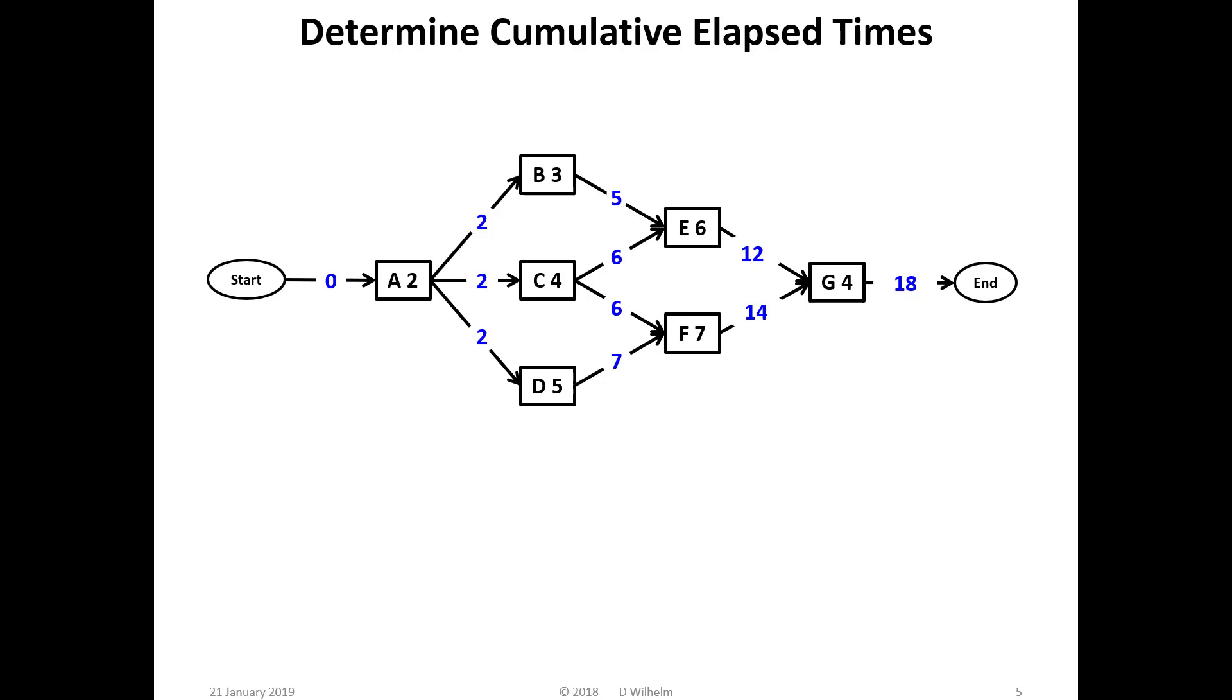Next, determine the critical path, the sequence of tasks that is the limiting factor in the project schedule. Whereas we work from left to right to determine the cumulative elapsed time, to determine the critical path we work from right to left. Only one link to the end, so task G must be on the critical path.